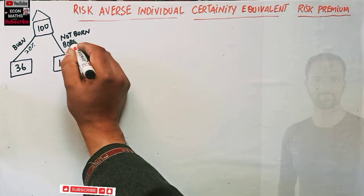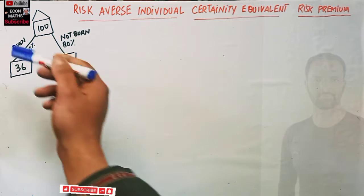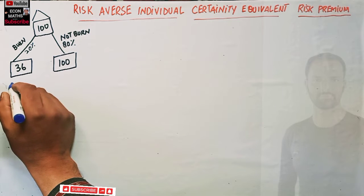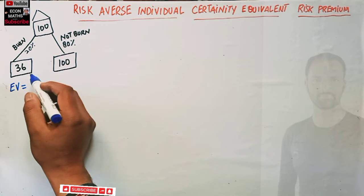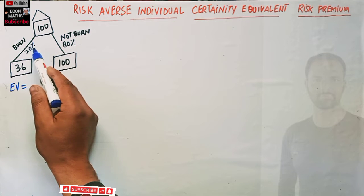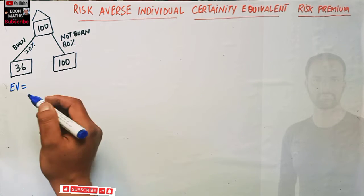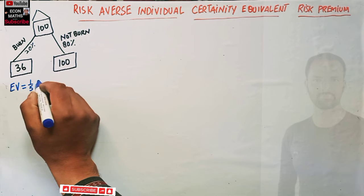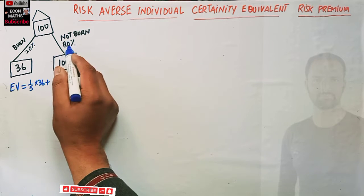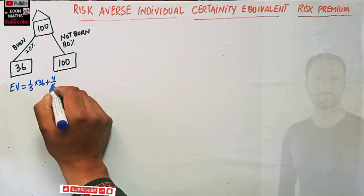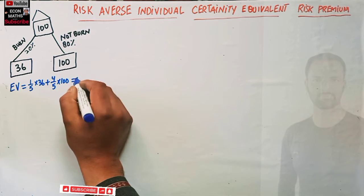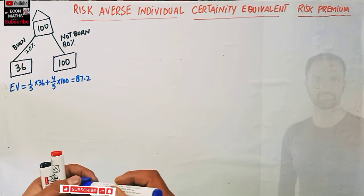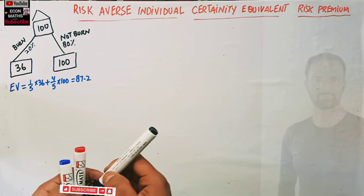There are 20 percent chances that this house may burn and 80 percent chances that it may not burn. This individual is facing this gamble. The expected value of the gamble is calculated by multiplying each random outcome with its probability and summing them up: (1/5)×36 + (4/5)×100 = 87.2.